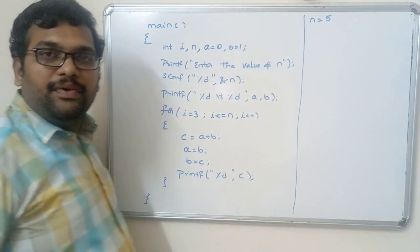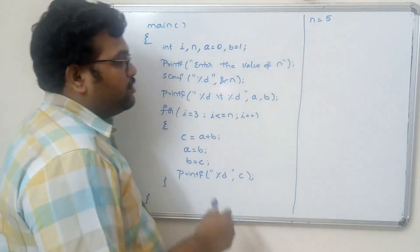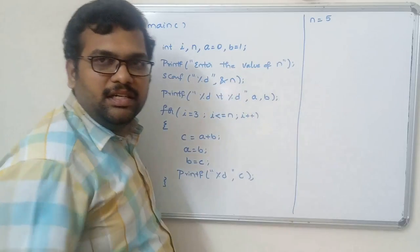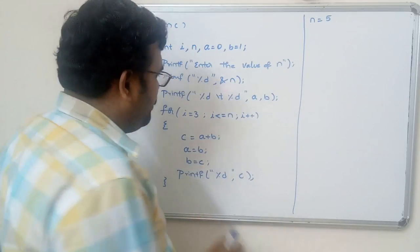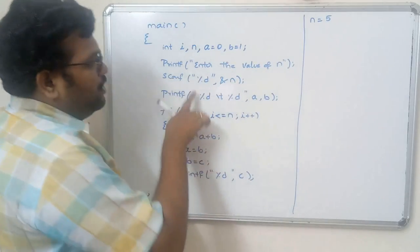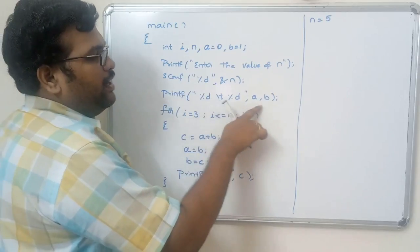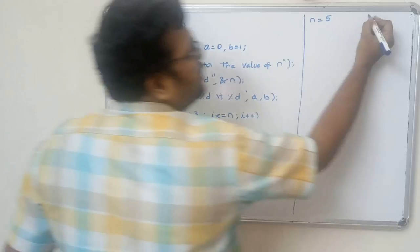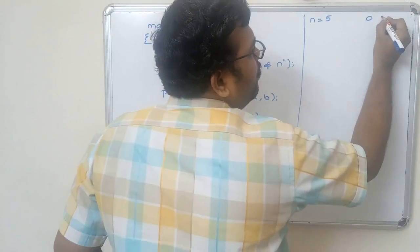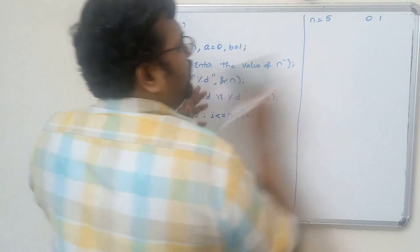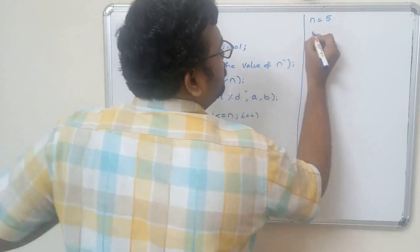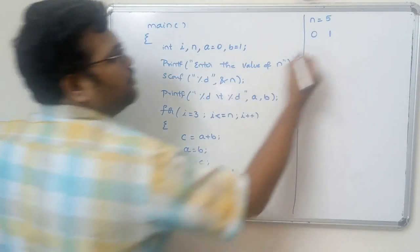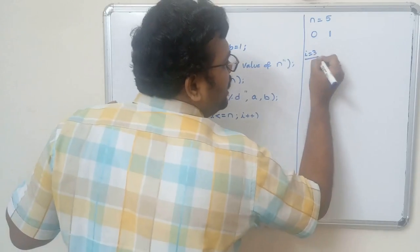With n equal to 5, we need the first five elements of the Fibonacci series. The printf statement prints a and b, so 0 and 1 are printed first. Next, the for loop starts with i equal to 3.